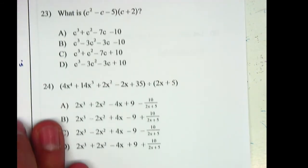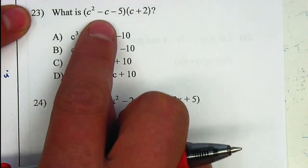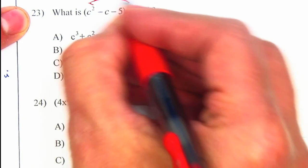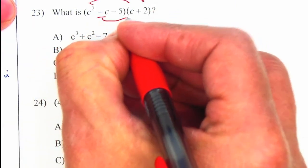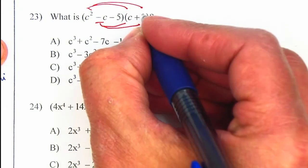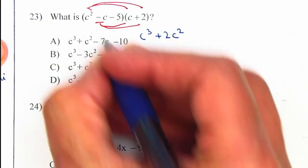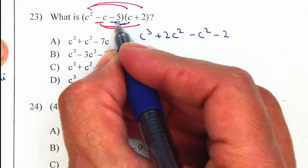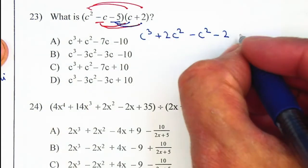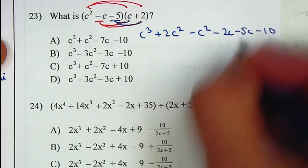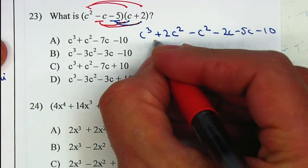Problem number 23. What is c squared minus c minus 5 times c plus 2? There's nothing in between, so that means they're multiplying. We need to distribute each term. c squared times c gives me c to the cube. c squared times 2 is positive 2c squared. Negative c times c is negative c squared. Negative c times 2 is negative 2c. Then distribute the negative 5 times c and negative 5 times 2, giving negative 5c and negative 10.